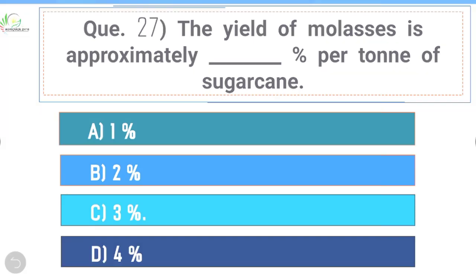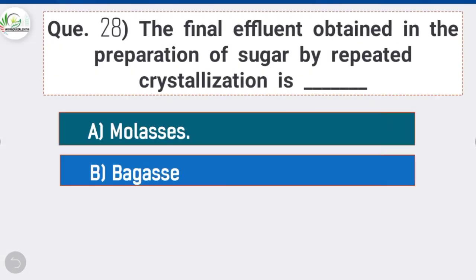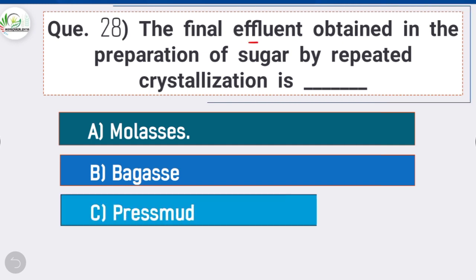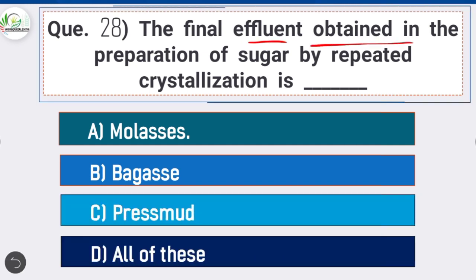Question 28: The final effluent obtained in the preparation of sugar by repeated crystallization is — option A is correct: molasses. Molasses is a viscous product resulting from refining sugarcane or sugar beets into sugar.